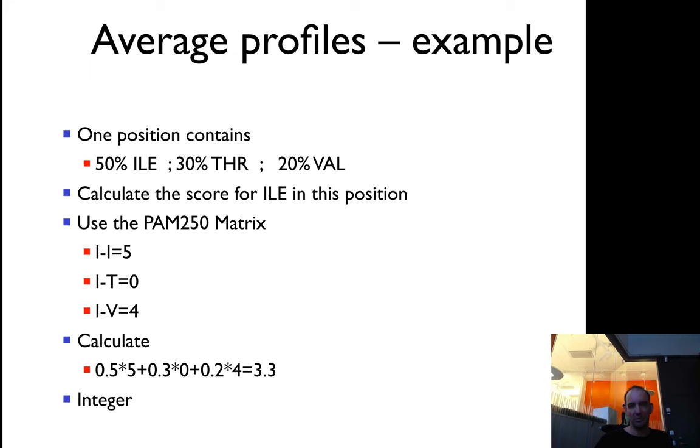If you take a position, you want to have a position that has 1/5 isoleucine, 1/3 threonine, 1/5 valine, use PAM250, and the II is 5, IT is 0, and IV is 4. You take 0.5 times 5, plus 0.3 times 0, plus 0.2 times 4, and you get 3.3. So you score that, you save the information, and also you save it as an integer form, multiply by 10 or something like that, for your profile. So it's easy.